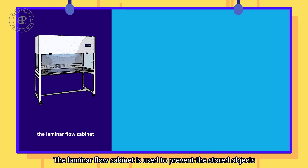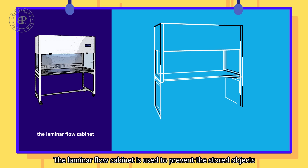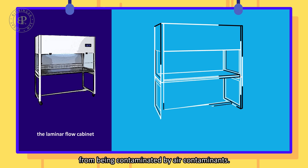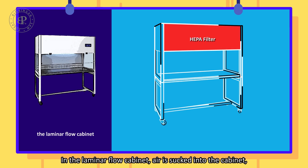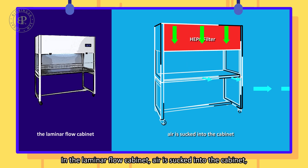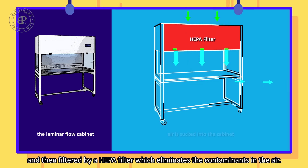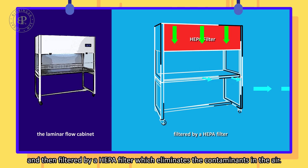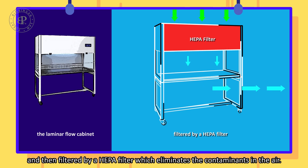The laminar flow cabinet is used to prevent the stored objects from being contaminated by air contaminants. In the laminar flow cabinet, air is sucked into the cabinet and then filtered by a HEPA filter, which eliminates the contaminants in the air.